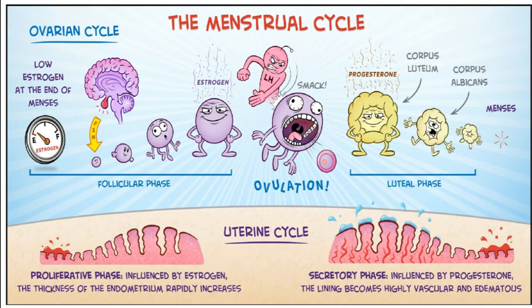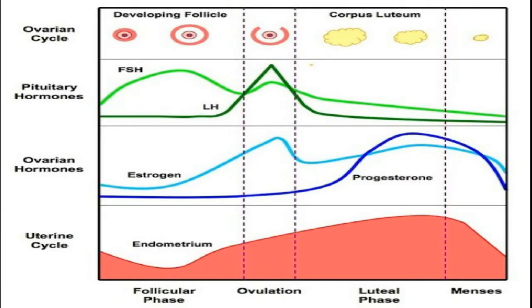After ovulation, another character — the corpus luteum — enters, producing progesterone at very high rates until fertilization occurs. If fertilization doesn't occur, the corpus luteum degenerates as the corpus albicans, finally ending in the menstrual phase, which is actually not the end but the beginning of the whole story again. There is also a very good abstract showing a comparison of ovarian and pituitary hormones.